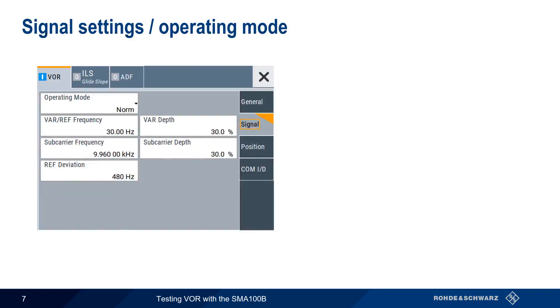The Signal tab allows you to specify the operating mode for VOR signal generation, as well as to view or edit the parameters of the basic VOR signal. In most cases, these basic signal parameters, such as the var-ref frequency, subcarrier frequency, deviation, etc., should be left at their default values.